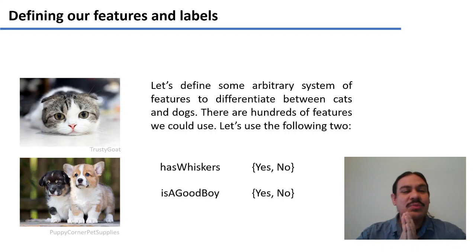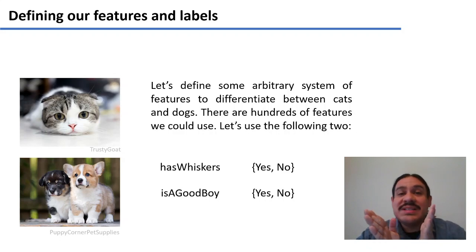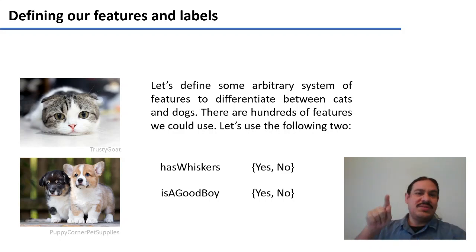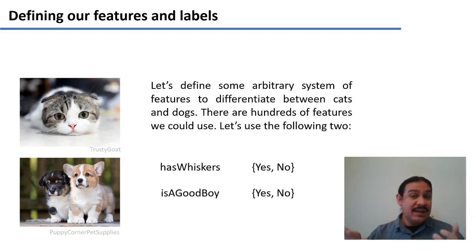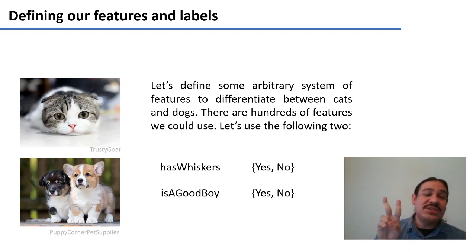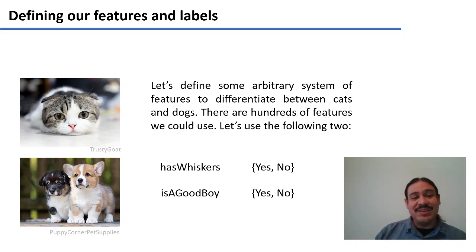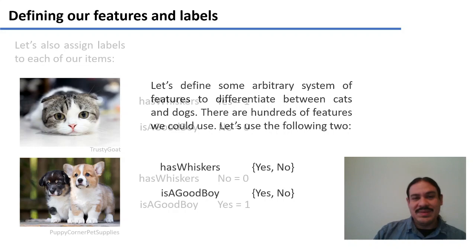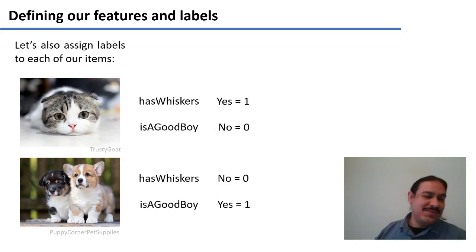The first thing we need to do is define our features — some arbitrary set of features. Maybe it's the pixels of a picture, a word vector, or features that you define. For example, let's say we have two objects in the world: kittens and puppies, which we'll call cat and dog. We define two toy features to identify them: do they have whiskers? Yes or no. And are they a good boy? Yes or no.